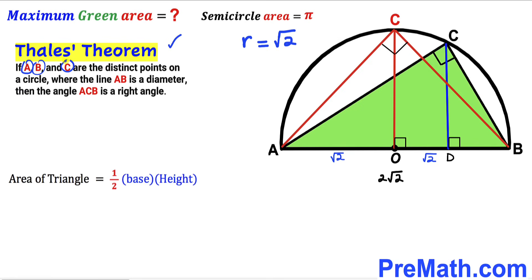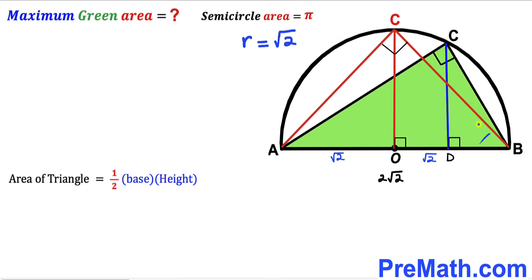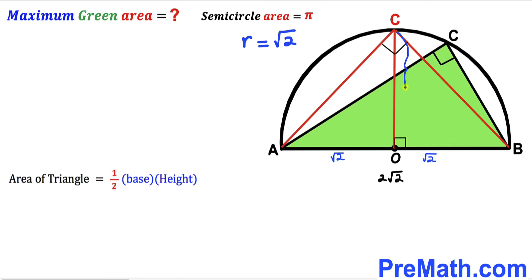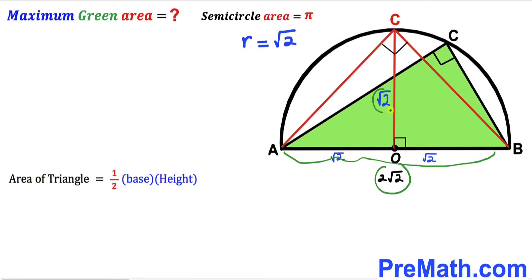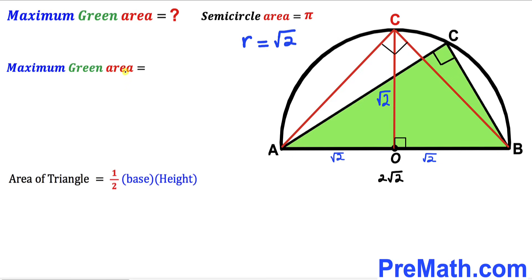According to Thales' theorem, if A, B, and C are three distinct points on the circle and AB is the diameter, then angle ACB is 90 degrees. So this new triangle gives us the maximum possible area. Furthermore, the height OC equals the radius, which is square root of 2. Thus the base of the triangle is 2 times square root of 2 and the height is square root of 2.